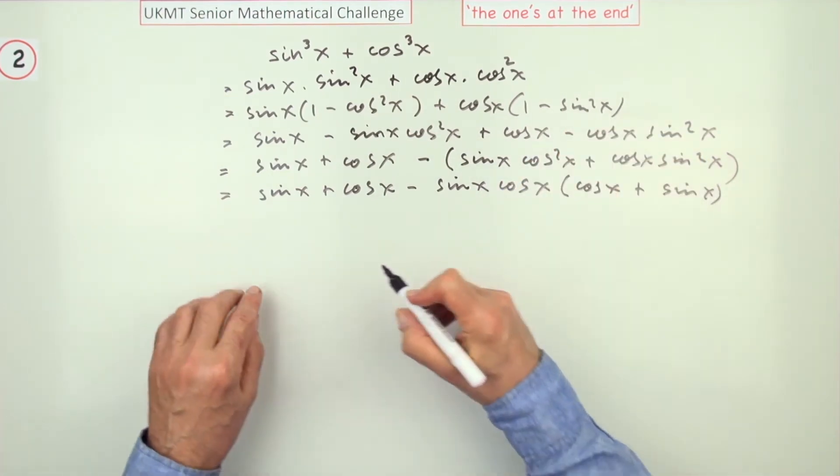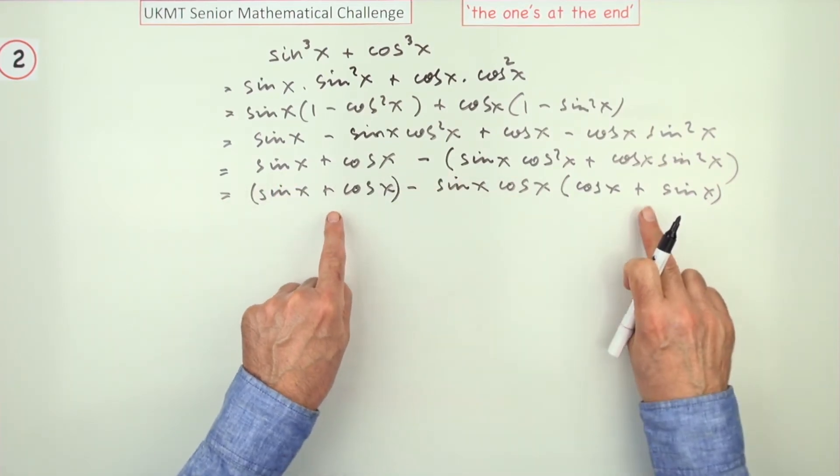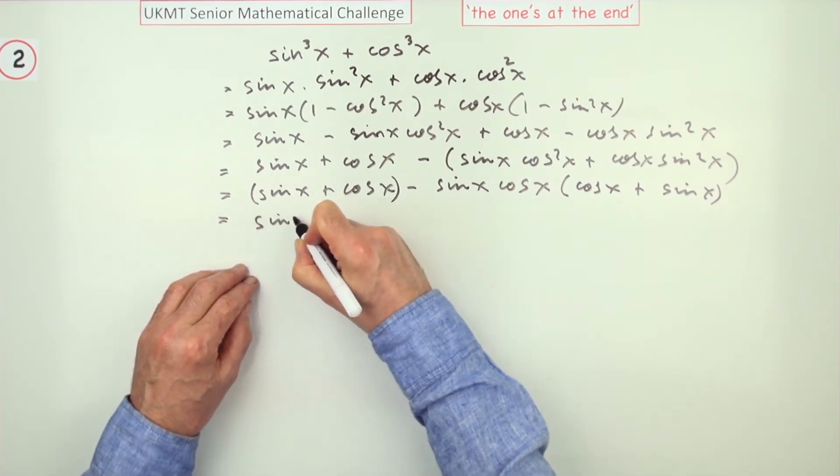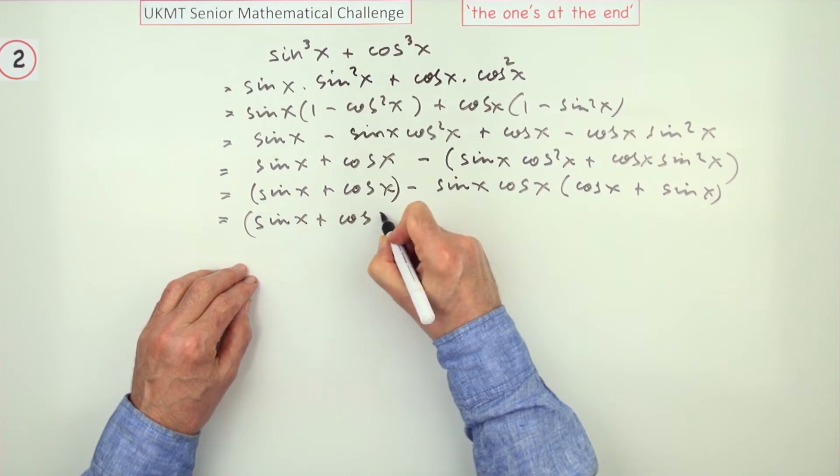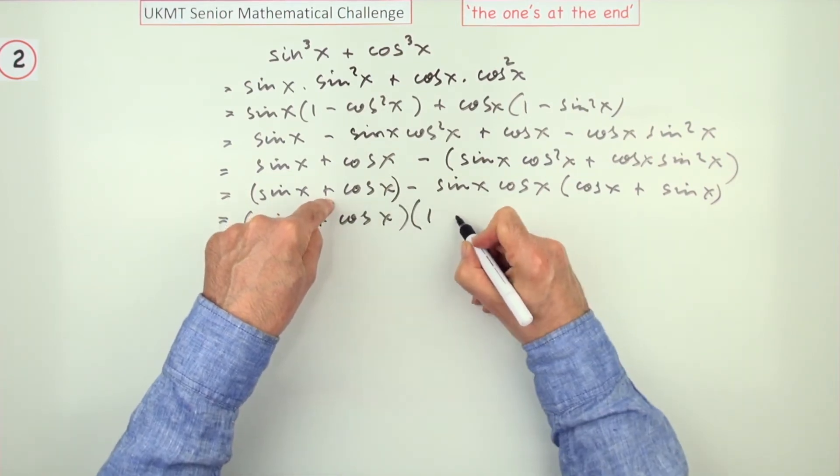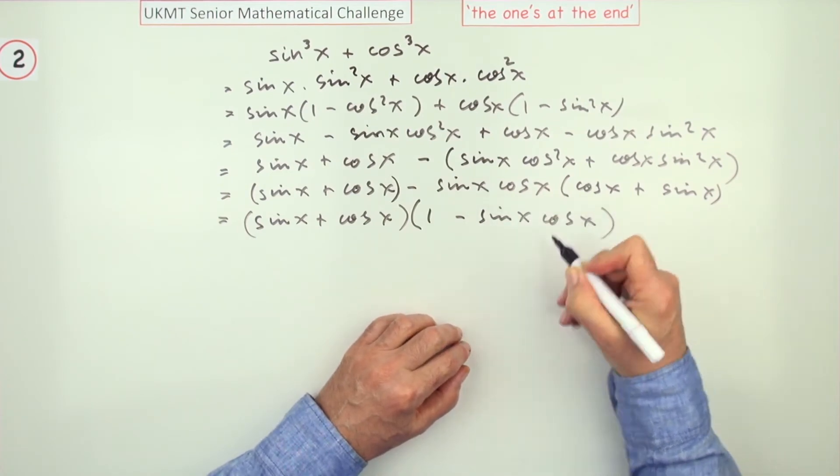Then if I put a little aesthetic bracket around this one, I can see I've now got another common factor of sine x plus cos x. So I'll take out that common factor of sine x plus cos x, and then I'm left with one of them minus this expression here, and there's the answer.